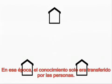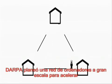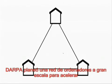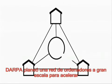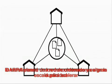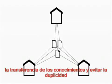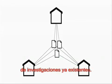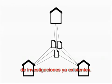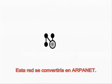At that time, knowledge was only transferred by people. DARPA planned a large-scale computer network in order to accelerate knowledge transfer and avoid the doubling up of already existing research. This network would become the ARPANET.